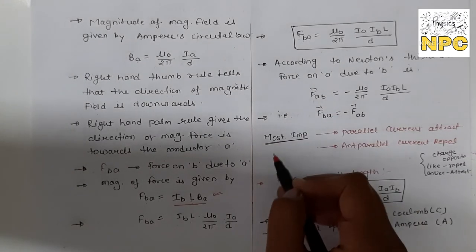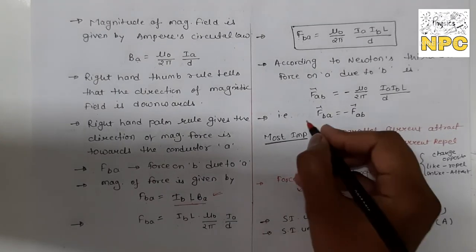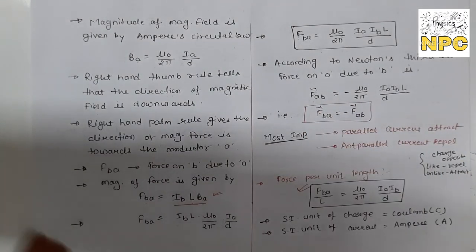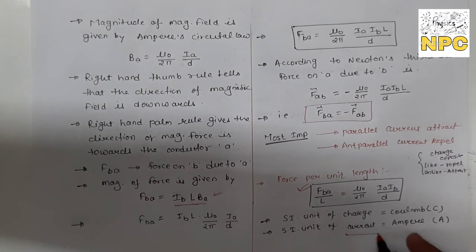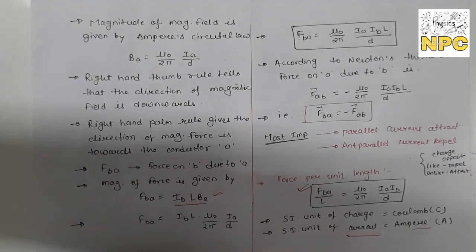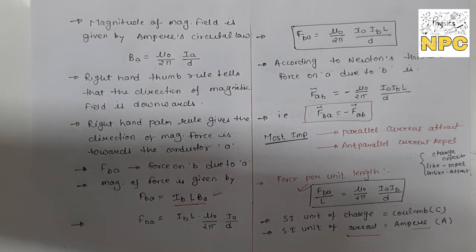The force on A due to B is equal and opposite by Newton's third law: F_B equals negative of F_AB. This covers the topic of force between parallel conductors and the unit of current. Next, we will discuss the galvanometer — that video will come soon. Until then, keep watching and keep learning. Thank you so much.